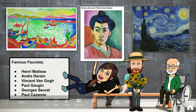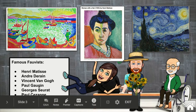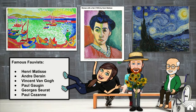Here are some very famous Fauvist artists: Henri Matisse, André Derain, Vincent van Gogh, Paul Gauguin, Georges Seurat, and Paul Cézanne. Now we've learned about a few of these throughout this year, but we're going to continue to learn about more. Look at these beautiful paintings.